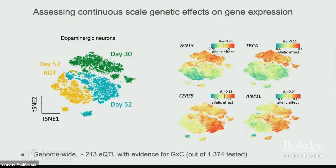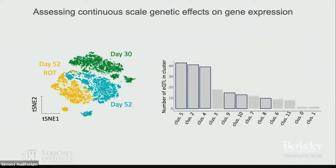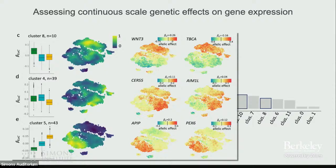Here are four eQTL genes where I show estimated genetic effect sizes in every single cell — not expression levels. The model estimates a per-cell effect size by pooling information across all other cells. We see effects concentrated in particular subpopulations even within the same neuronal cell type. Clustering genes by their effect size profiles reveals regulatory variants active only in specific subpopulations, providing strong evidence that you need the right cellular subset to find these variants.